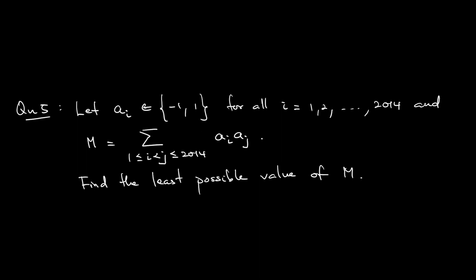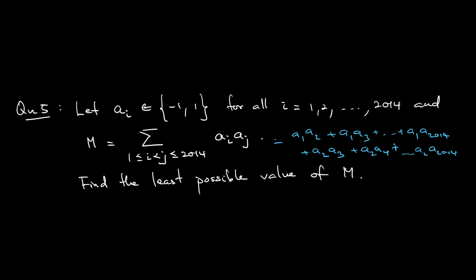To clarify the summation, M includes all cross terms: a₁a₂ + a₁a₃ + … + a₁a₂₀₁₄, plus a₂a₃ + a₂a₄ + … + a₂a₂₀₁₄, and so on. You have the choice to set each aᵢ to either +1 or −1. What is the minimum value of M?